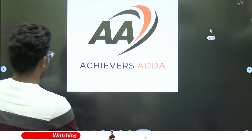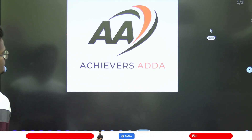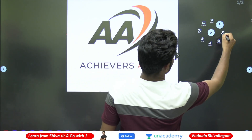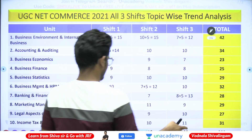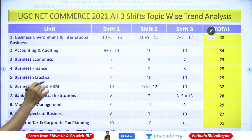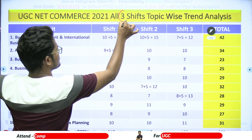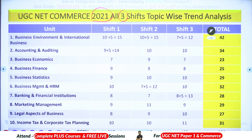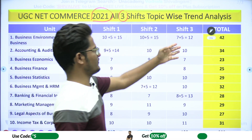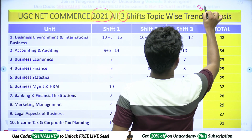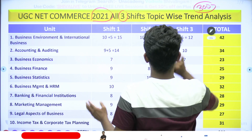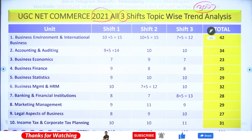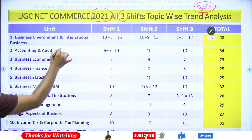The total three shifts of UGC NET Commerce 2021 examination — Shift 1, Shift 2, Shift 3 — have 100 questions each, totaling 300 questions. There are 10 units: Business Environment, International Business, Accounting and Auditing, Economics, Finance, Statistics, HRM and Management, Banking and Financial Institutions, Marketing, Legal Aspects of Business, Income Tax, and Corporate Tax Planning.